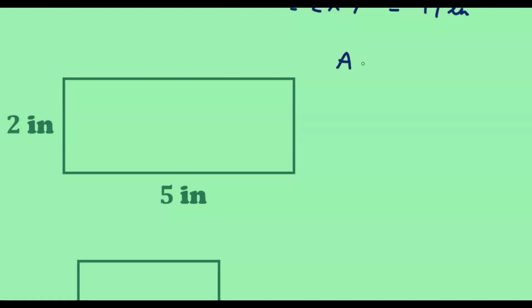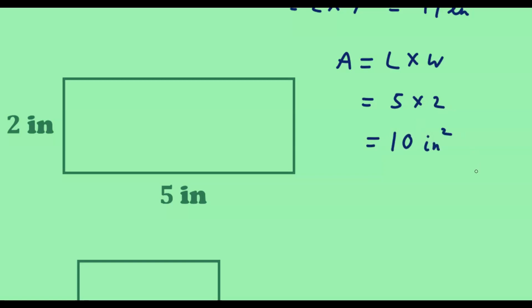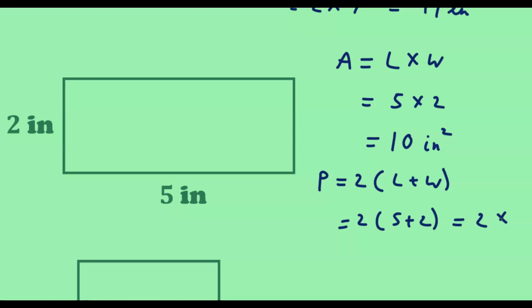For the next rectangle, the length is 5 inches and the width is 2 inches. The area is 5 times 2, which is 10 square inches. The perimeter is 2 times 5 plus 2, equal to 2 times 7, which is 14 inches.